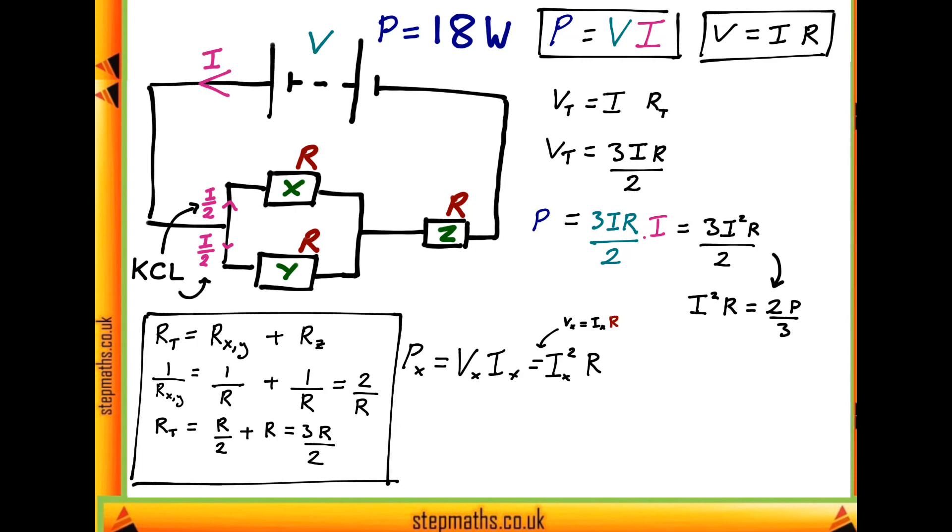Since we know what I_X is, it's just I over 2, we can substitute this in, giving us that the power through X is equal to I²R over 4. Now, handily, we worked out I²R earlier on. It's just 2P over 3. So we can substitute this into our expression to find that the power through X is just a quarter multiplied by 2P over 3, where P is just the power we were given earlier on in the question, 18 watts. So substituting this in, we get an answer of 3 watts, and therefore the answer to our question is C. Thank you.